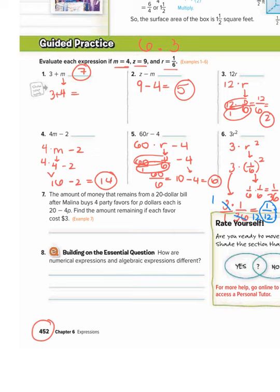Okay, last one. The amount of money that remains from a $20 bill after Melina buys 4 party favors for P dollars each is 20 minus 4P. Find the amount remaining if each favor costs $3.